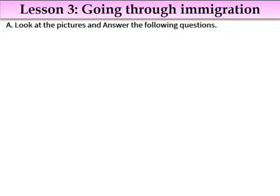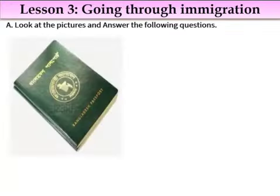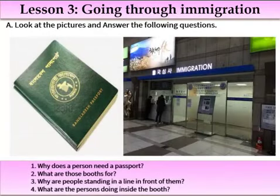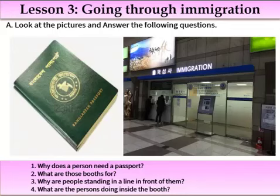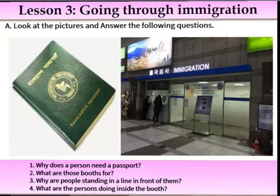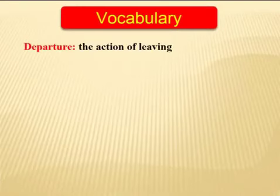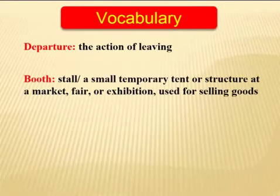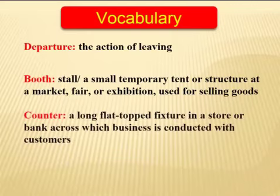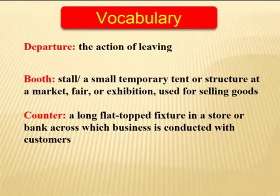Lesson 3: Going through the immigration. Now look at the pictures and answer the following questions. Question 1: Why does a person need a passport? Question 2: What are those booths for? Question 3: Why are people standing in line in front of them? Question 4: What are the persons doing inside the booth? Now jump into the vocabulary. Stall — a small temporary tent or structure at a market, fair or exhibition used for selling goods. Counter — a long, flat surface in a store or a bank across which business is conducted with a customer.